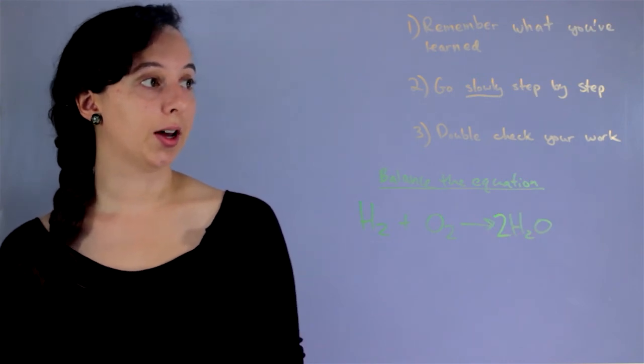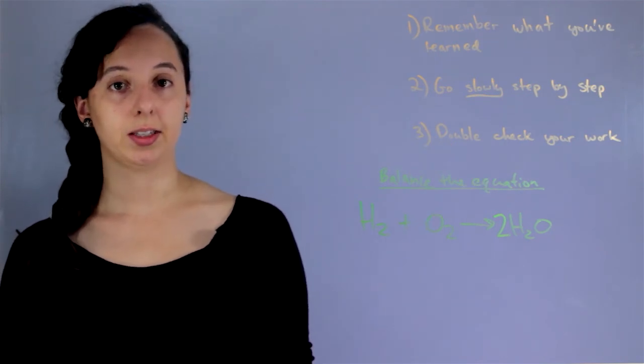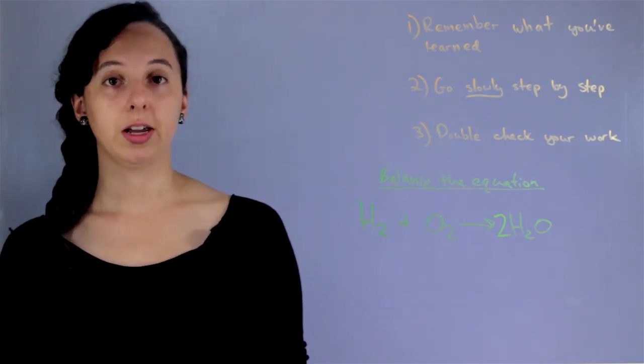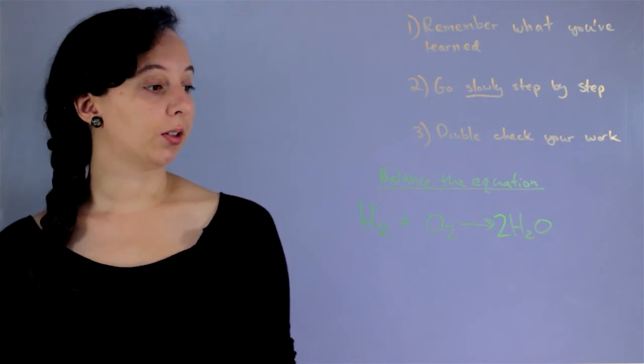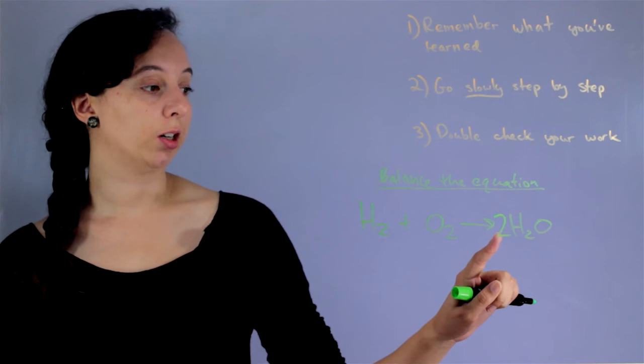And so now this is a part where we can really use number two. We're going slowly. We're also going step by step. And we're kind of making sure we don't mess up. Since in our minds, we already balanced hydrogen and we just balanced oxygen, you might be tempted to leave.